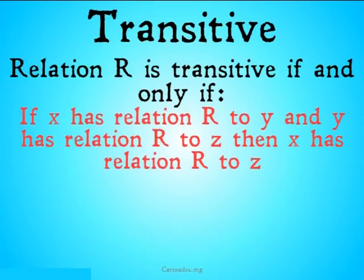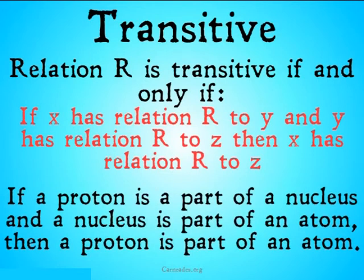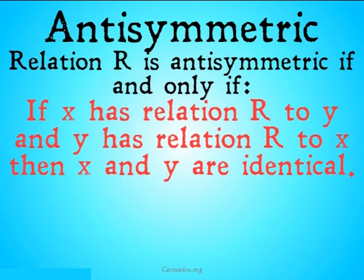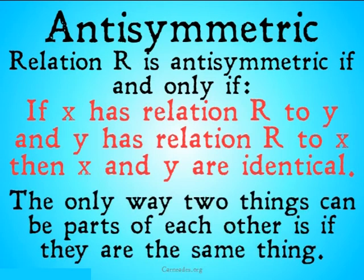You can also have transitivity. Transitivity is going to be a property of parthood: if X is a part of Y and Y is a part of Z, then X is going to be a part of Z. For example, if a proton is part of a nucleus and a nucleus is part of an atom, then a proton is going to be part of an atom. Finally, parthood is an anti-symmetric relation. That means if X has relation R to Y and Y has relation R to X, then X and Y are identical — basically, the only way two things can be parts of each other is if they're, in fact, the same thing.